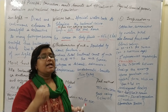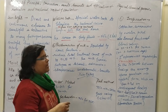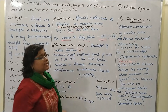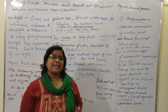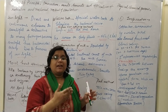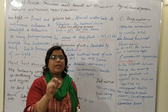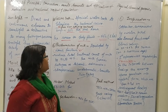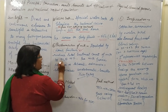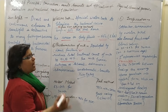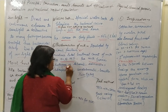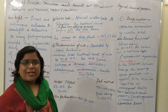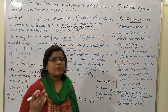Pasteurization of milk was discovered by Louis Pasteur. Around 97 to 99 percent of the total bacterial count are destroyed. It is used for milk-borne pathogens such as Mycobacterium tuberculosis, Salmonella, Streptococcus, Coxiella burnetii, and Brucella. Pasteurization of milk is of two main types: the Holder method and the Flash method.